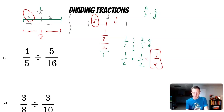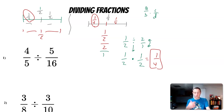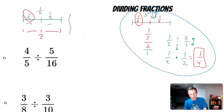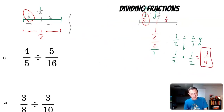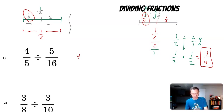We multiply across the top — one times one is one — and across the bottom — two times two is four — so we get one fourth. So if I take a half unit and cut it in half, I get two segments that are a fourth unit long. Now let's take that idea and do some problems. First up: four fifths divided by five sixteenths.